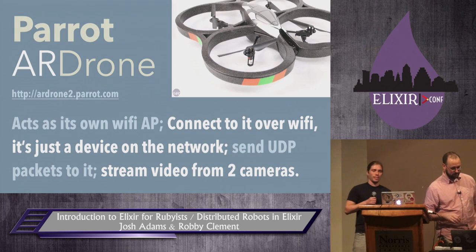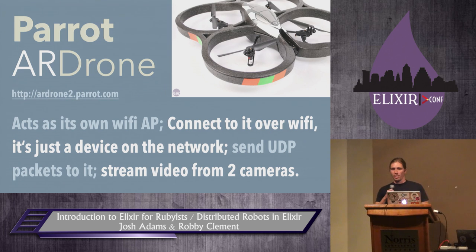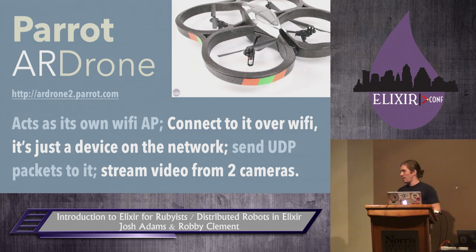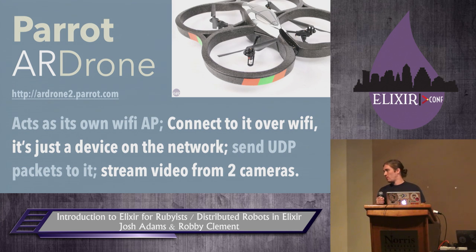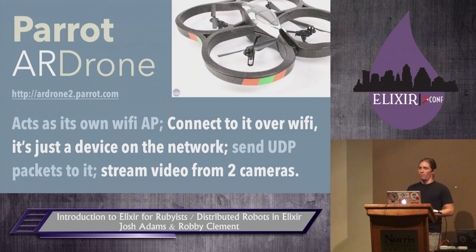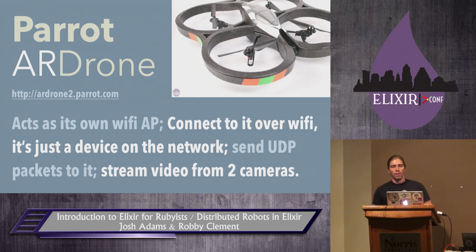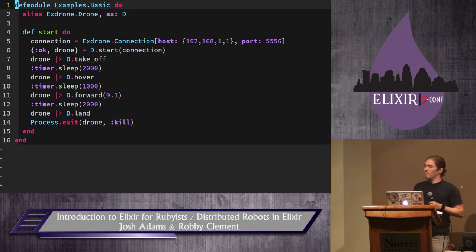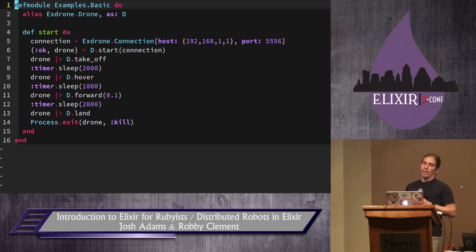Our next toy is the Parrot AR Drone, also known as the Deathcopter. This guy creates his own Wi-Fi access point and you connect to him and just send UDP packets to control him. He's also got video cameras. You can probably get one for about $250 for a new one, $150 for a refurb, or 146,571 dogecoins. Here's a basic example using our ExDrone module — we control takeoff, hovering, moving forward, and landing in theory.